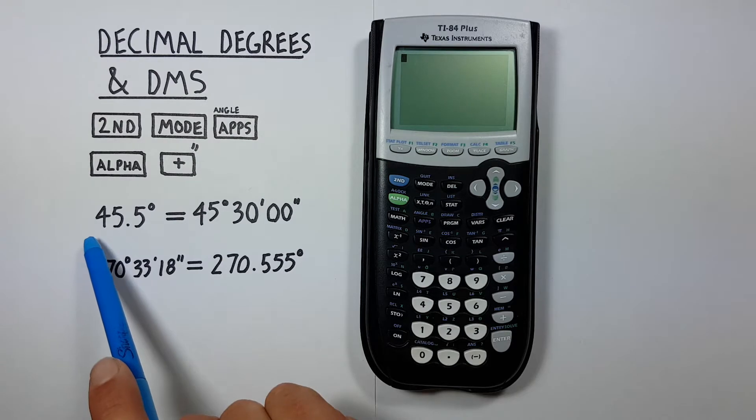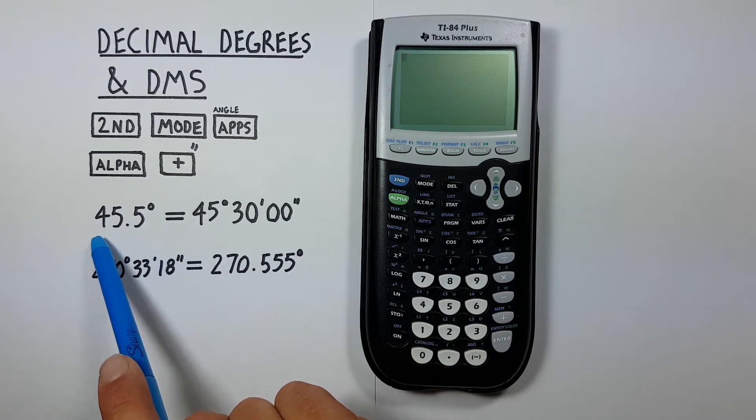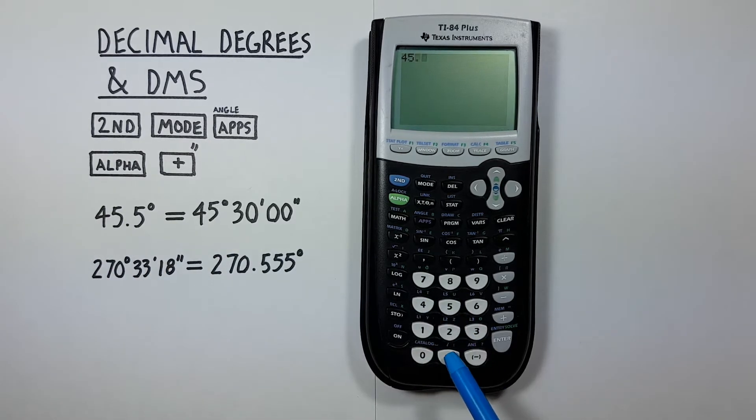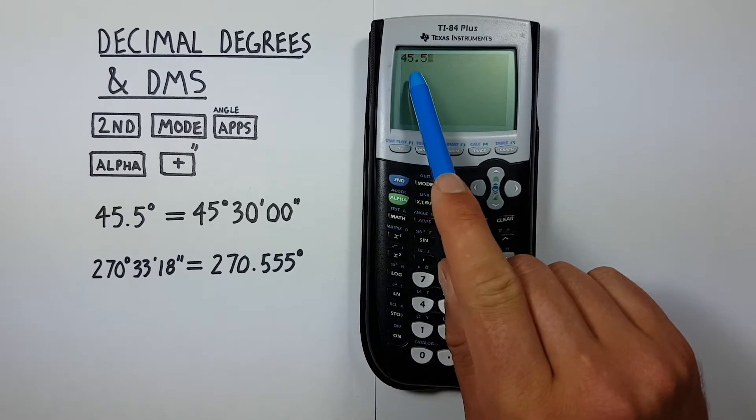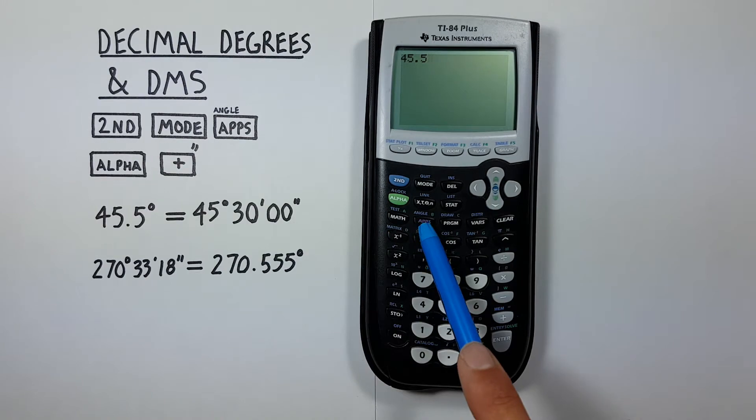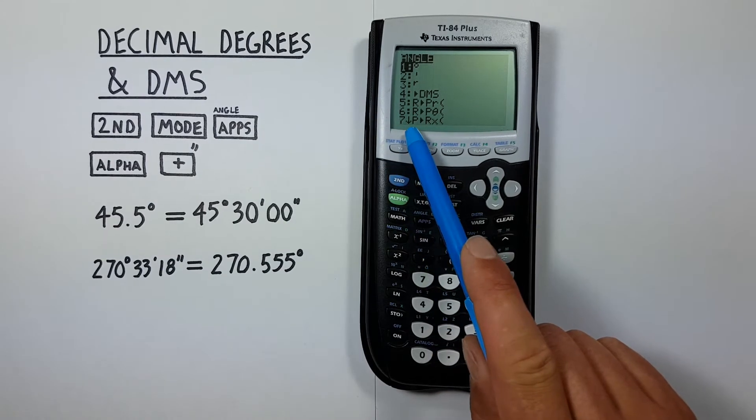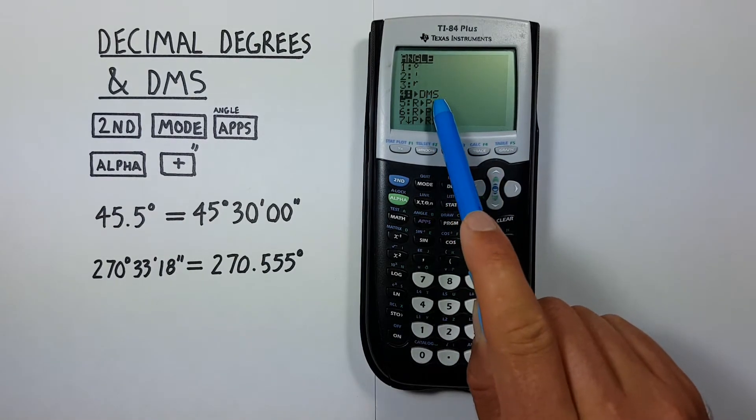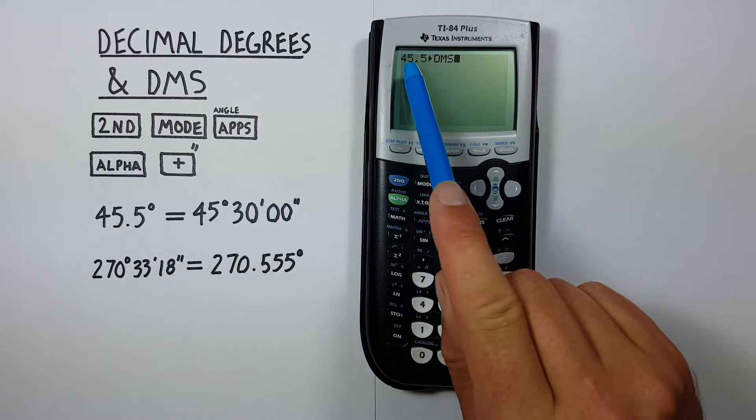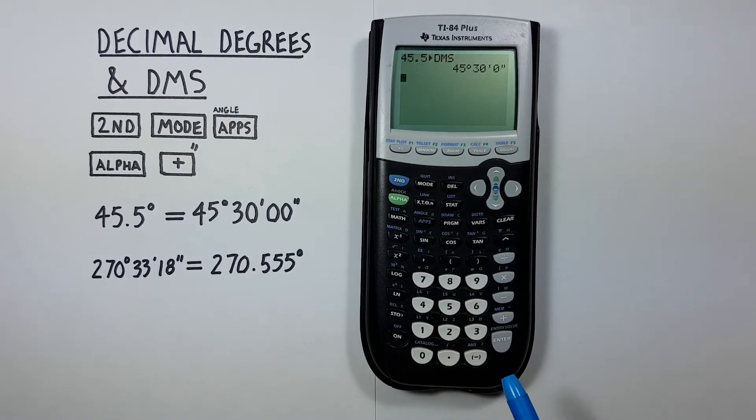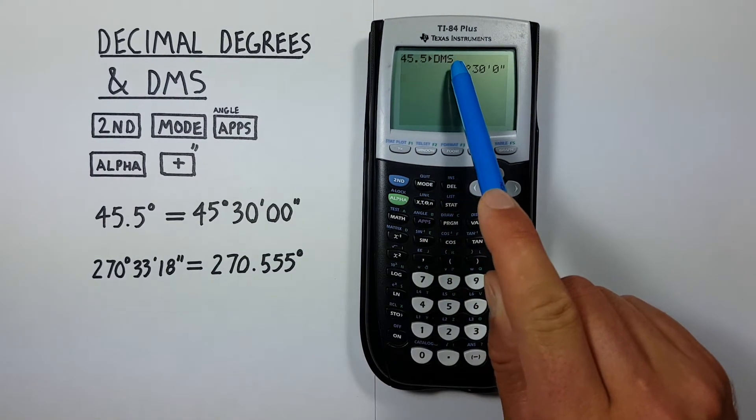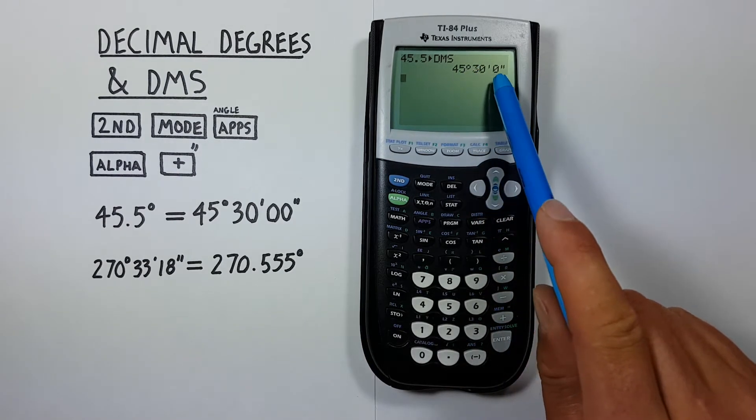If we're given decimal degrees, like say 45.5 degrees, and want to convert that to degrees, minutes, seconds, we can do this by entering it onto our screen. So there's our 45.5 degrees. And then we hit second and then the apps key, which second function is angle, to bring us to the angle menu here. Now the fourth option here is into DMS. That means converting to degrees, minutes, seconds. And now if we press enter, we see our 45.5 decimal degrees has converted to degrees, minutes, seconds, which is 45 degrees, 30 minutes, 0 seconds.